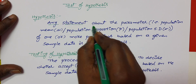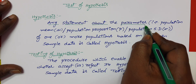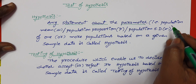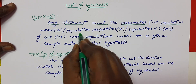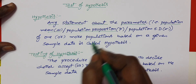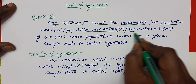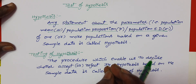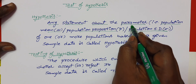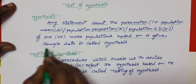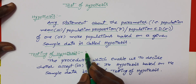Any statement about the parameter — the parameter means the population measurement, that means the population mean or proportion. The proportion is one type of probability and ratio. The population variance and standard deviation are also parameters. A statement based on the given sample data is called the hypothesis.